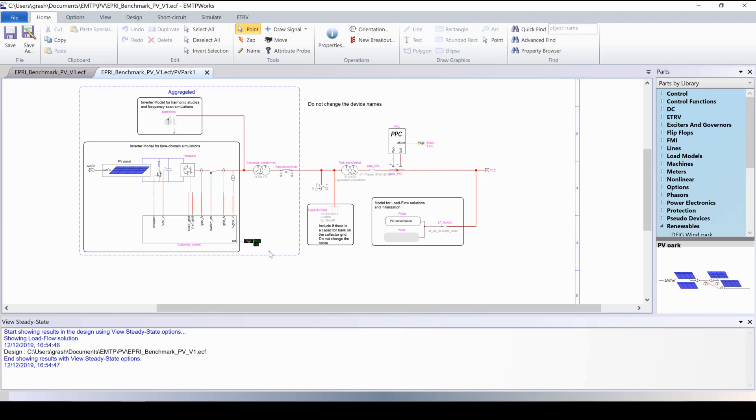Starting from this point here, everything is aggregated. You have here the collector grid equivalent, the converter transformer aggregated, and here the time domain model. The converter control is in this block here.